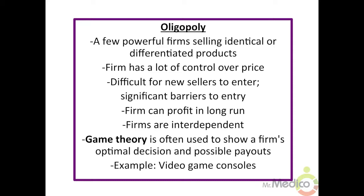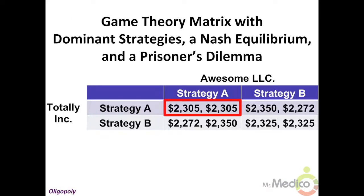Firms in an oligopoly are interdependent, so game theory is often used to show a firm's optimal decision and possible payout. An example of an oligopoly would be the market for video game consoles. Game theory is an important topic that comes up in the discussion of oligopoly.